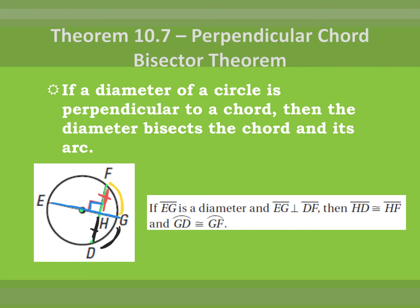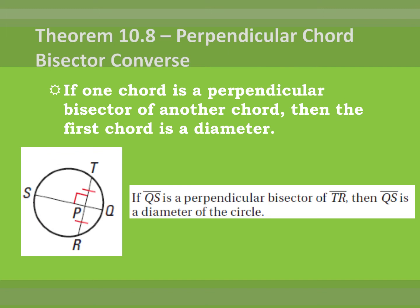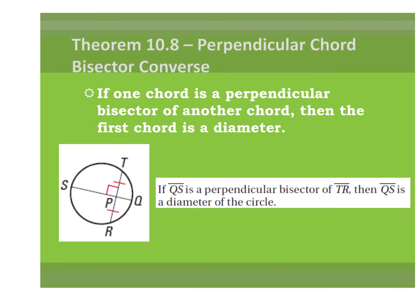Now we're going to see the converse of this. The converse of the Perpendicular Chord Bisector Theorem states that if one chord is a perpendicular bisector of another chord, then that first chord is a diameter. We can see this chord is perpendicular to the other chord and is a perpendicular bisector because of the congruent pieces. Because of that, we can conclude that QS is a diameter — it's the same thing but in reverse.